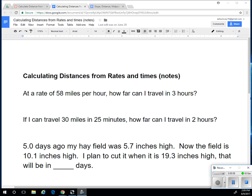So at a rate of 58 miles per hour, how far can I travel in 3 hours? So 58 miles per hour, and if I do that for 3 hours, then the units left will be miles. That's 58 times 3.